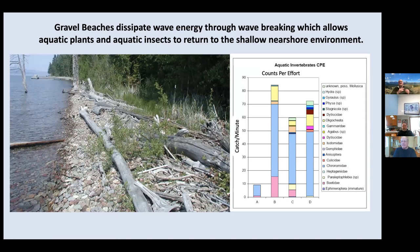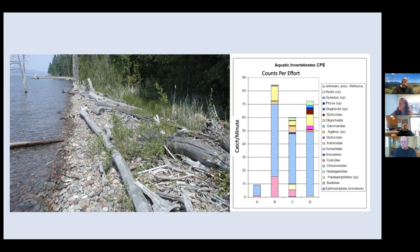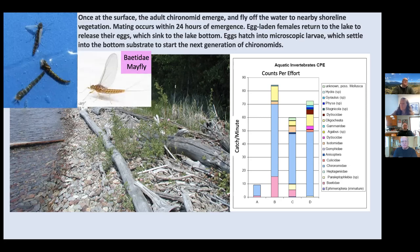On the right is a university student that looked at this beach — those are all counts per effort per minute of aquatic insects. Most of them are in the back part of that beach where there's actually some water. It's a gravel spit, with the A portion being the front side. It's full of chironomids and mayflies. Part of their life cycle is they lay eggs and the larvae work their way through the interstitial spaces in the gravel and feed on what's growing down there.